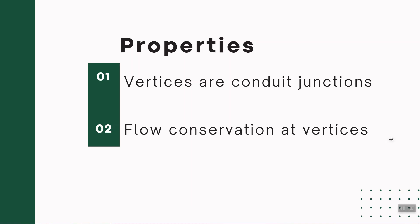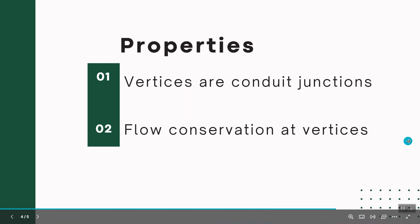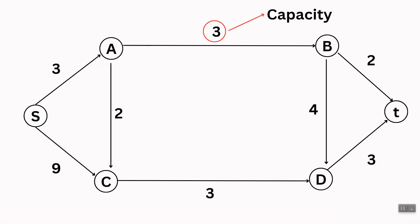The properties of flow networks: vertices are conduit junctions, meaning materials flow through without collecting at vertices, except at the source and sink. There is flow conservation at vertices — the amount produced at the source equals the amount consumed at the sink. The number of materials moving along an edge is called capacity, and the maximum number of materials that actually moves through an edge is called flow.